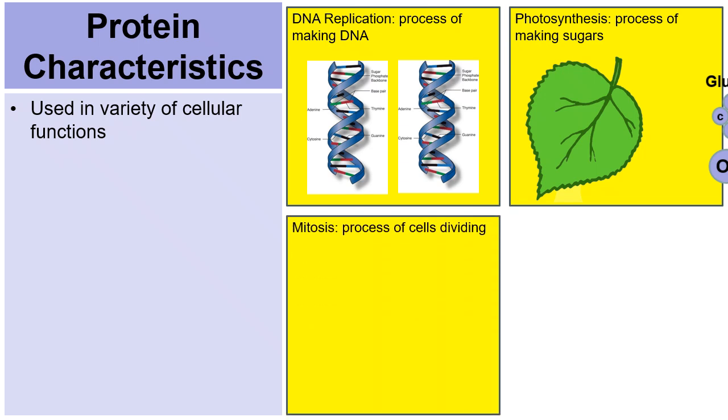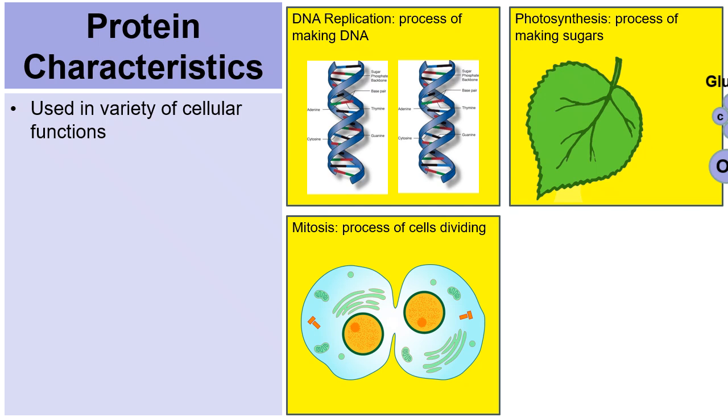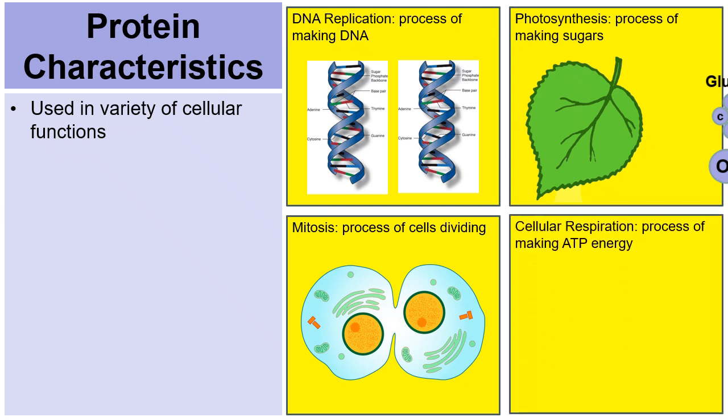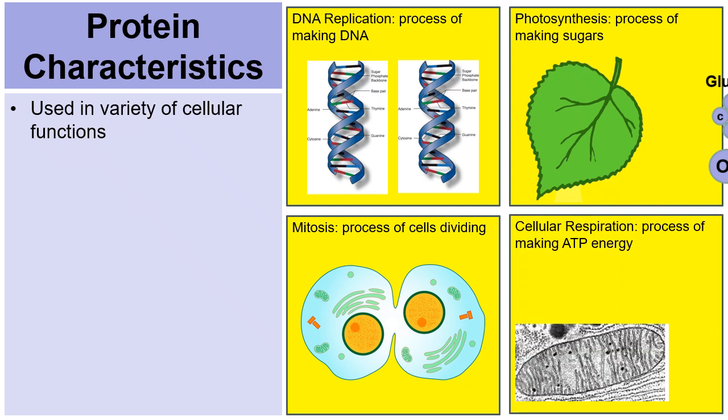And then the process of mitosis, where cells multiply or divide. One cell goes through a process called mitosis to make two cells. There are various proteins used along the journey. And then also cellular respiration, the process of the mitochondria creating molecules of ATP. A wide variety of proteins are used in this process as well. So proteins really have their hands in pretty much all the actions that cells perform.